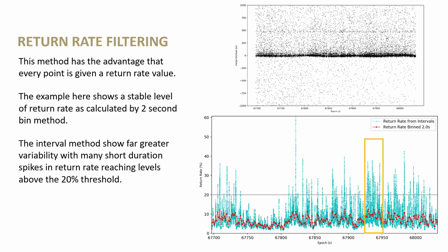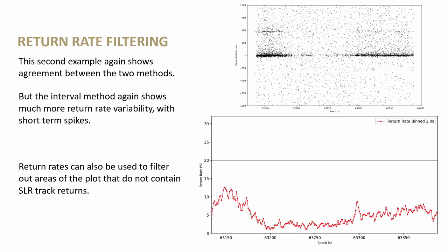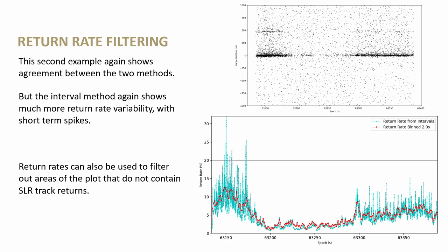Zooming in, the spikes are there — the data is stopping and starting, and the return rate is reaching high levels more instantaneously. That might allow us to reduce certain parts of the data more aggressively. Here's another example where data comes and goes and comes back again. The two-second bin return rate shows one view, while the new method shows a lot more variability. There's good agreement at lower rates, but then more spikes.